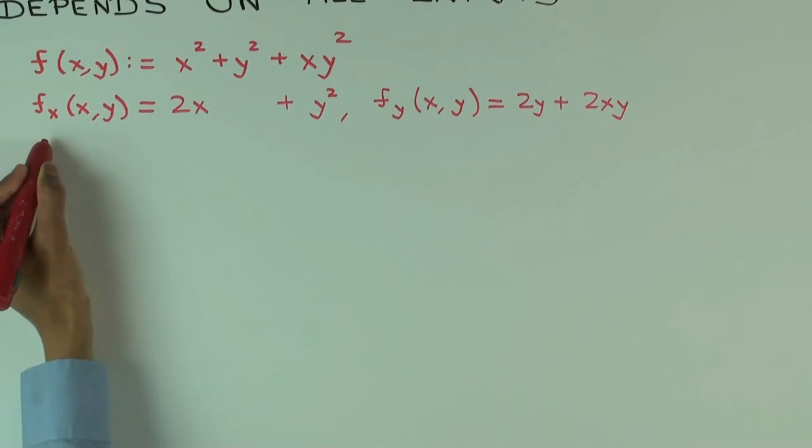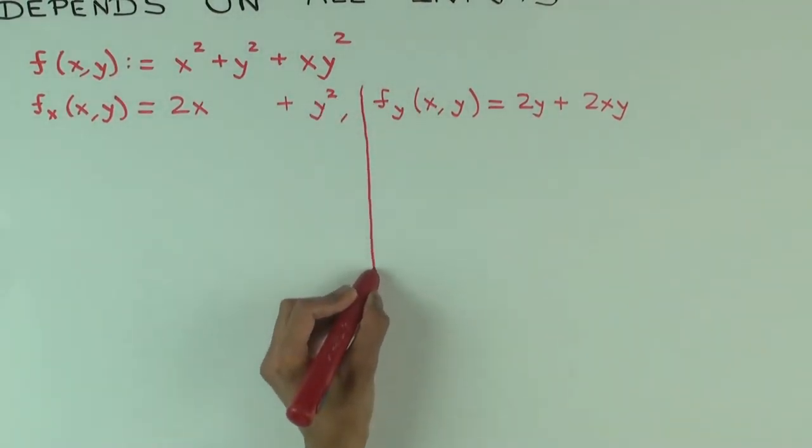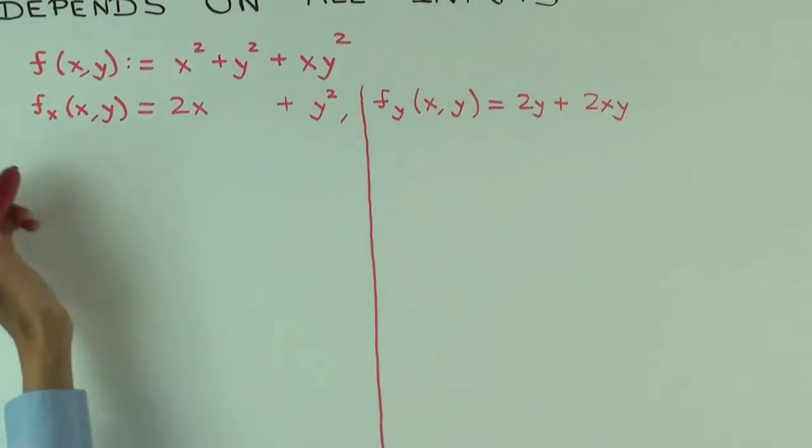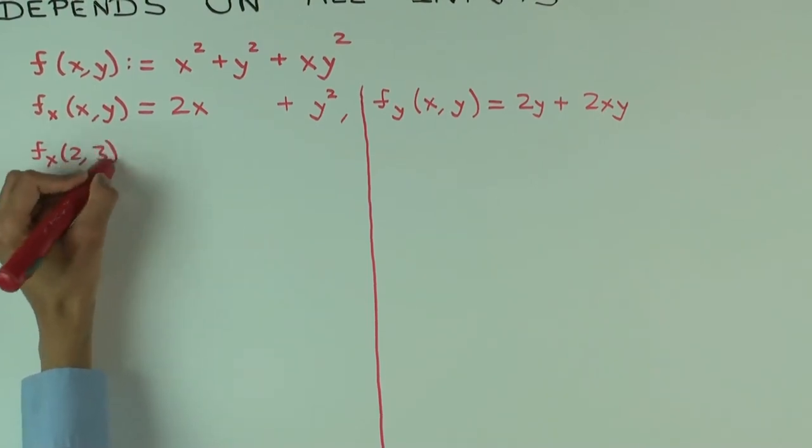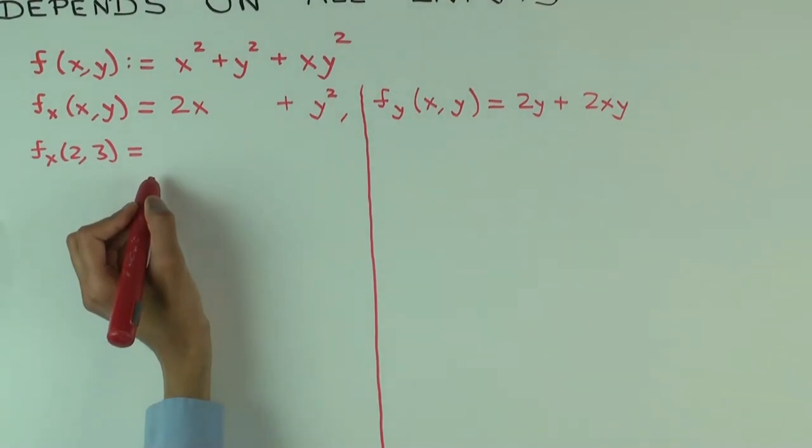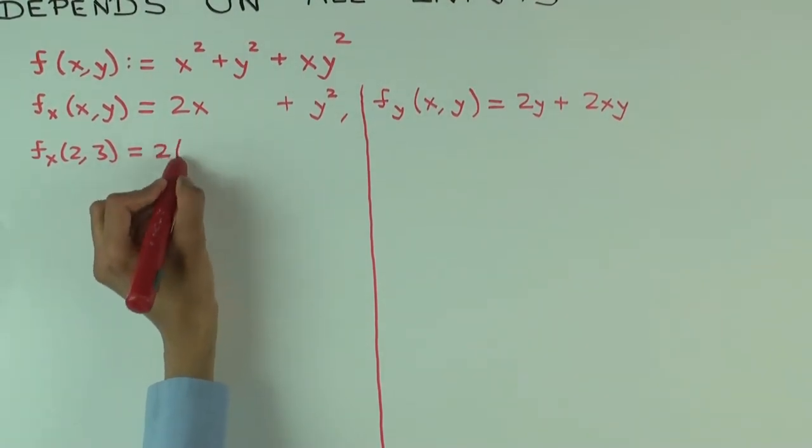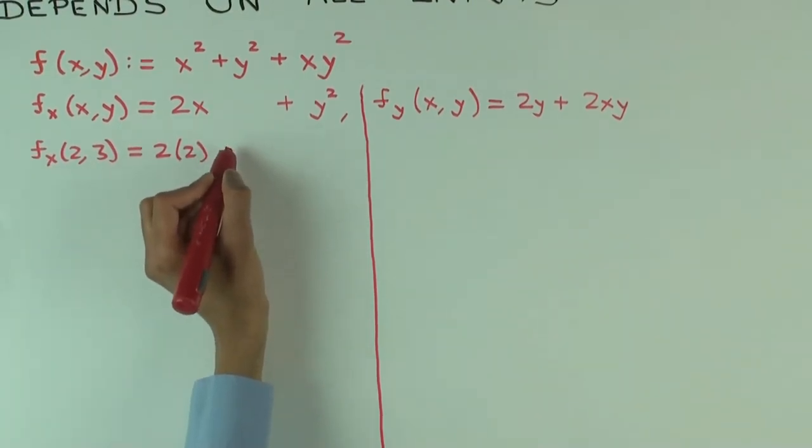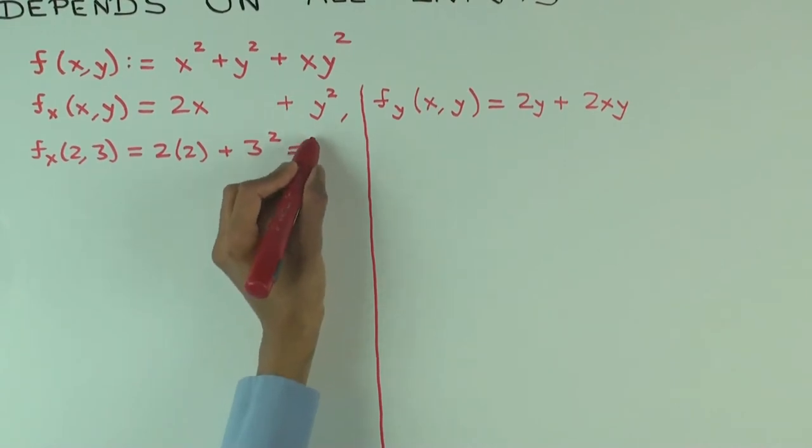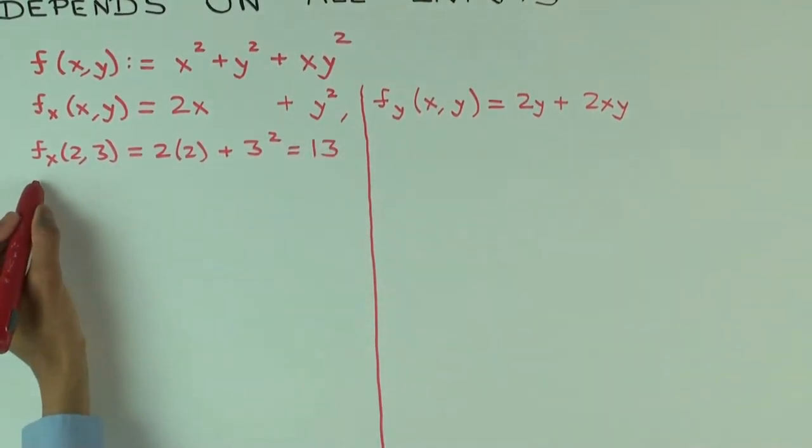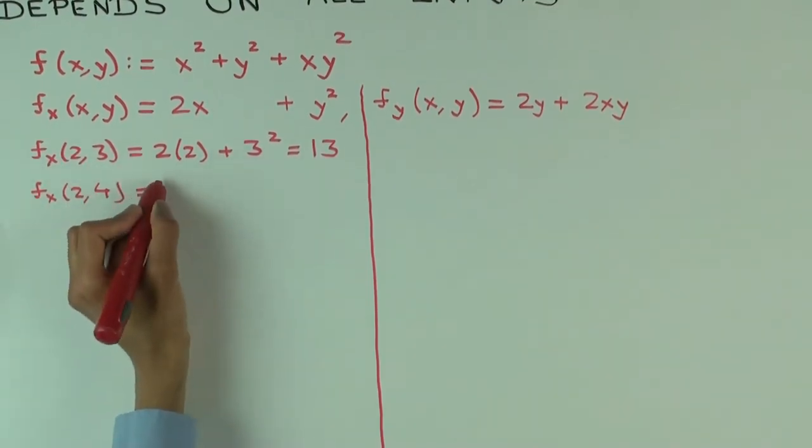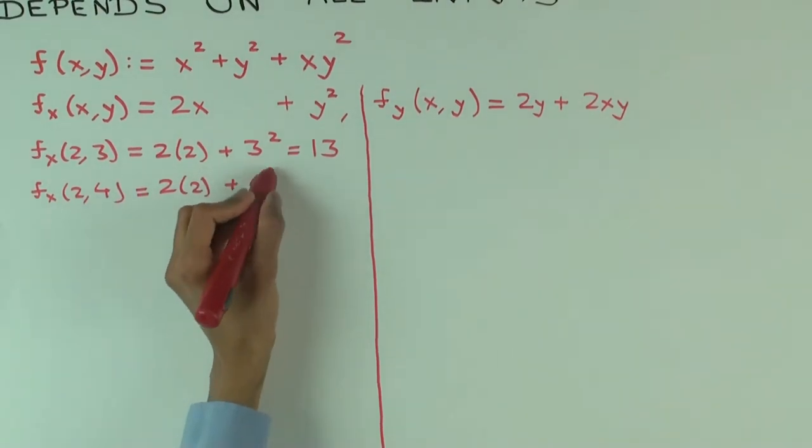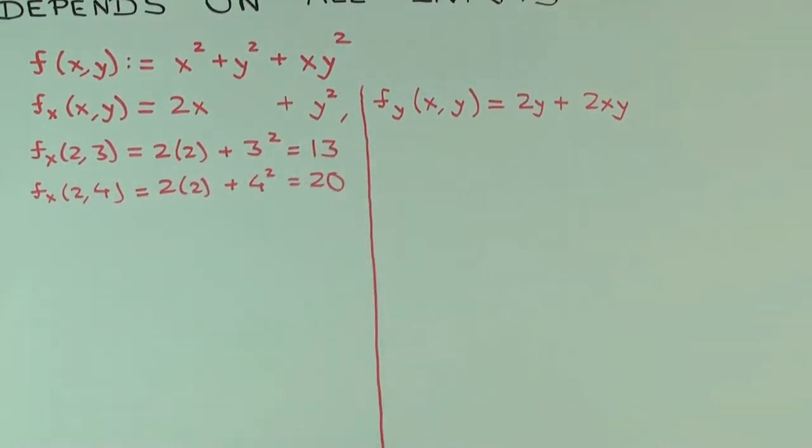What is f sub x of (2, 3)? It's 2 times 2 plus 3 squared, which is 13. What is f sub x of (2, 4)? Notice the x value remains the same, but the y value changed. That's 20.